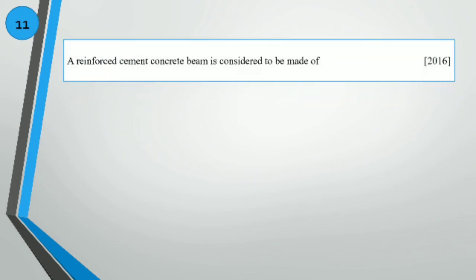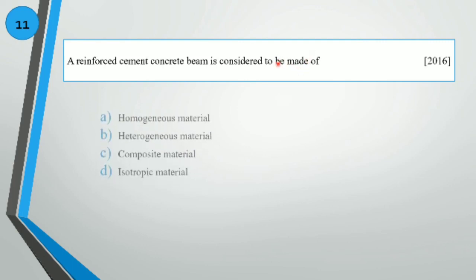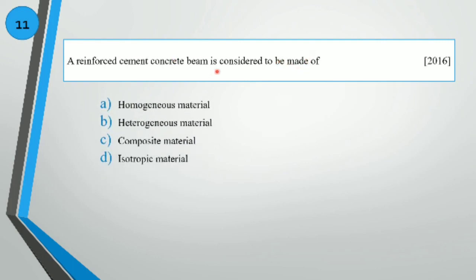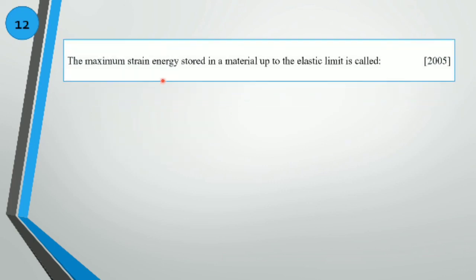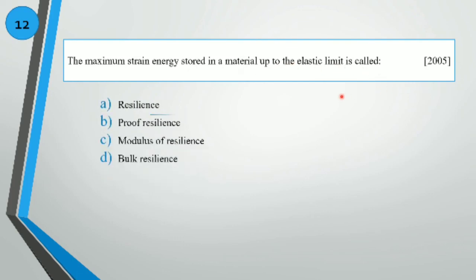A reinforced cement concrete beam is considered to be made of a composite material. The maximum strain energy stored in a material up to the elastic limit is called proof resilience.